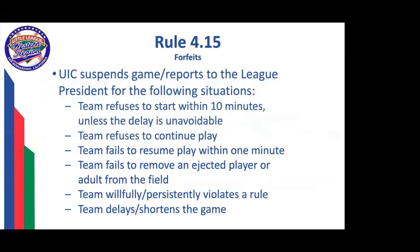Rule 415 in the Little League rulebook states that the umpire may forfeit the game for six situations: a team refuses to start, a team refuses to continue, they fail to remove an ejected player or adult, they continually violate a rule, or they do anything to delay or shorten the game. However, it's recommended to simply suspend the game and send a complete report to the board of directors for review.